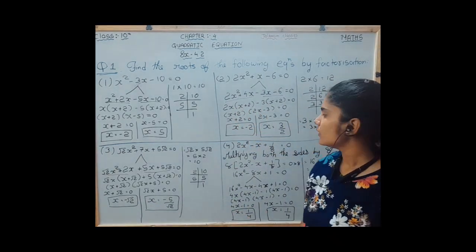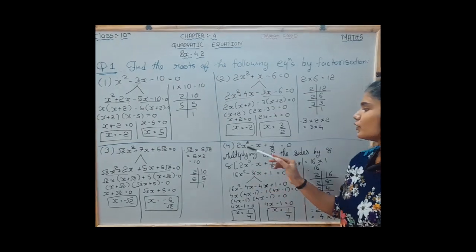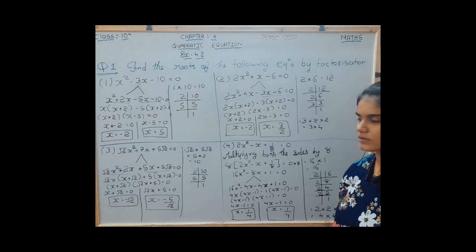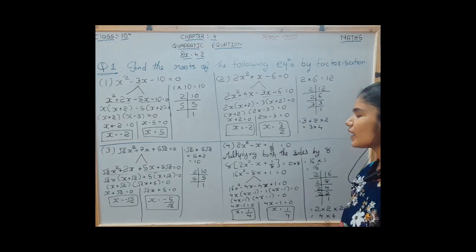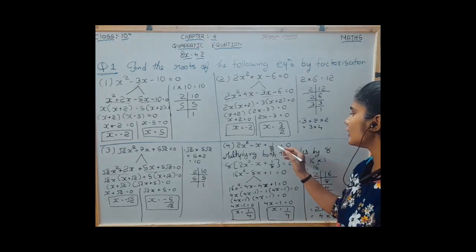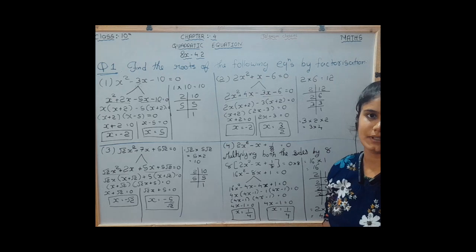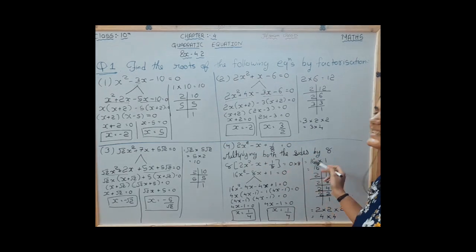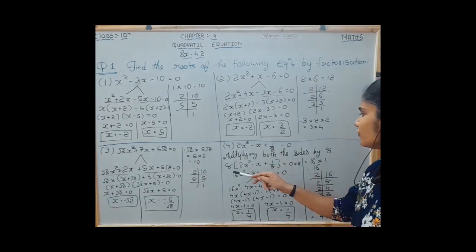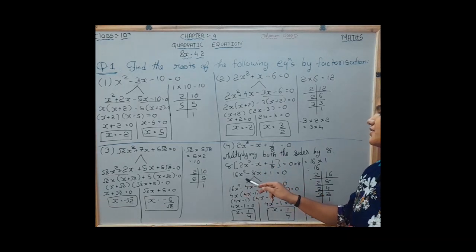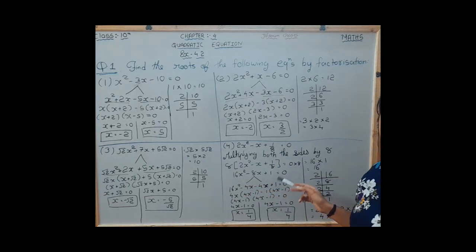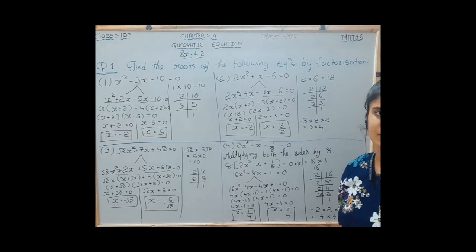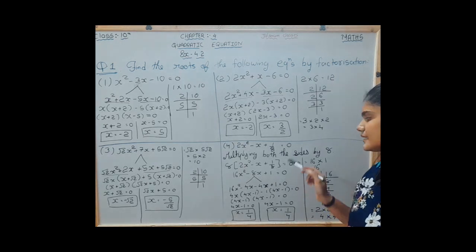Question number 4: 2x squared minus x plus 1 upon 8 is equal to 0. First we remove the 8 from the denominator by multiplying both sides by 8. We get the equation 16x squared minus 8x plus 1 is equal to 0, since 8 multiplied by 0 remains 0.